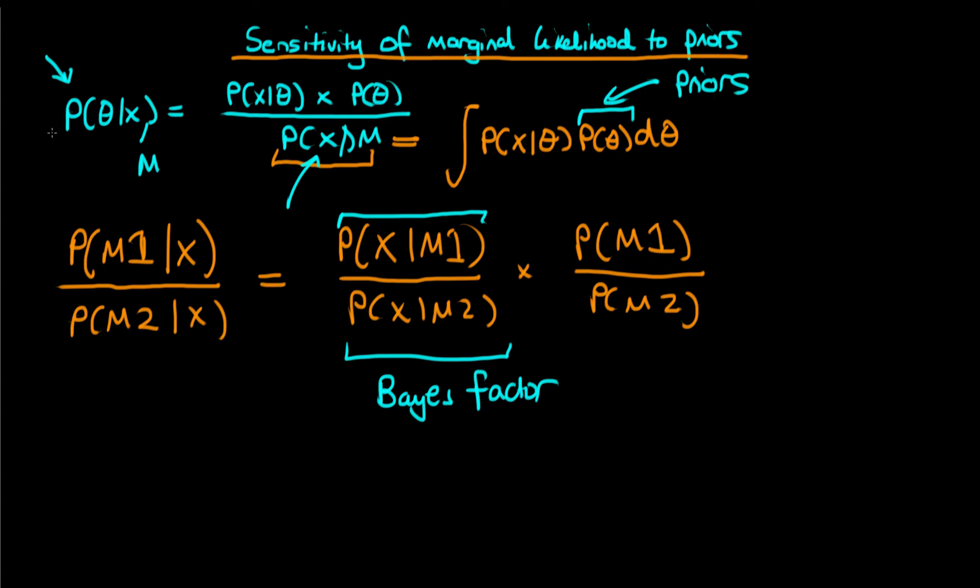But a marginal likelihood that strongly depends on it. So what we can see is that sometimes if you change your priors, there is no noticeable effect on your posterior or a very small effect on your posterior. However, the marginal likelihood can change significantly. And this is one of the reasons why I don't like using the marginal likelihood as a way of doing model comparison.